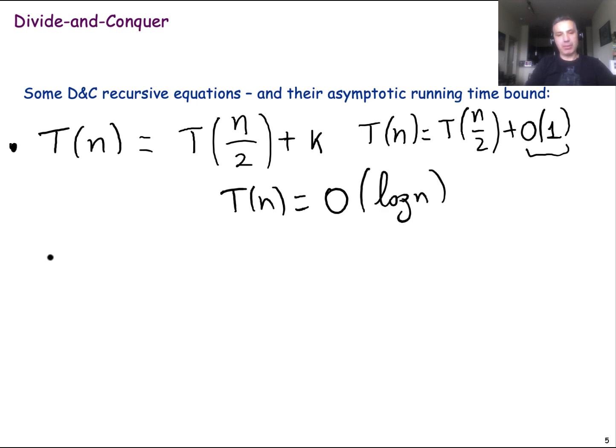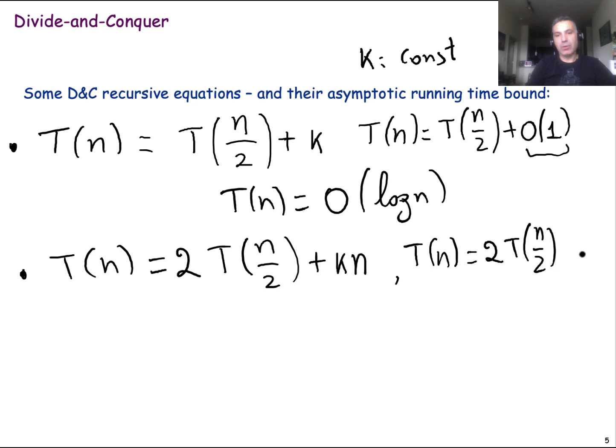We will see another very common recursion in which you split the problem into two problems, each of them of size n over two and then you do some work which is proportional to n. K again here is a constant, remember. So for this recursion, you could have also written that T of n is two T of n over two plus big O of n because we have linear time to combine the solutions. And we will prove later that T of n is in this case big O n log n.